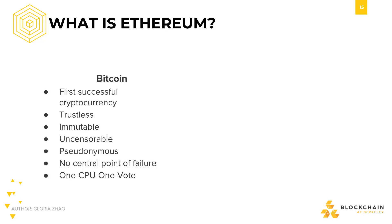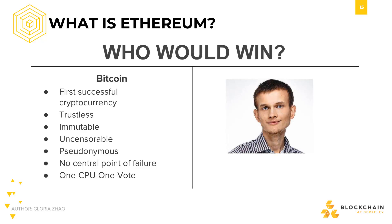Ethereum has all of these, but has a different use case. Before the creation of Ethereum, Vitalik Buterin, the creator of Ethereum, had argued that Bitcoin needed a more general-purpose scripting language, but he didn't get much support for his proposal. So he made Ethereum, and one of the most notable features is that it supports a Turing-complete scripting language.